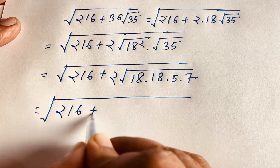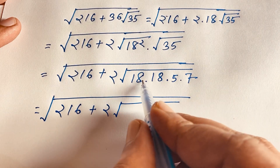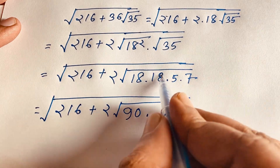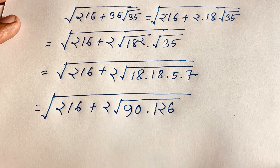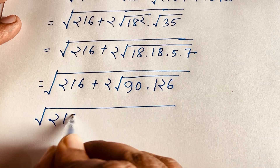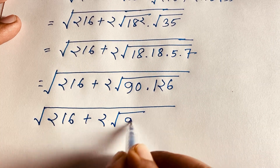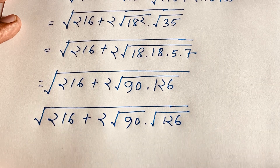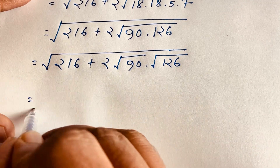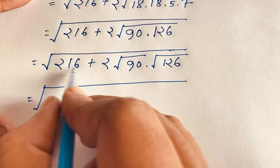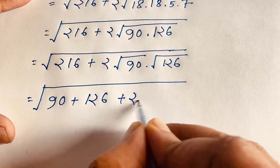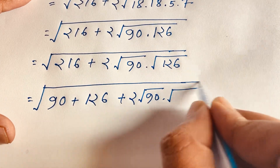This gives square root of 216 plus 2 times (square root of 18 times 5) times (square root of 18 times 7). That is 18 times 5 equals 90, and 18 times 7 equals 126. So the expression becomes square root of (216 plus 2 times square root of 90 times square root of 126), which equals square root of (90 plus 126 plus 2 times square root 90 times square root 126).